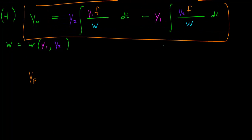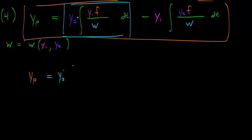So, yp prime. If we look at just the first term, this is a product of two functions, so we use the product rule to differentiate it. The product rule tells us we take the derivative of the first thing — that's y2 prime — times the second thing, which is the integral of y1 f over W. The derivative of an antiderivative is just the integrand back again, so this gives us y2 prime times y1 f over W.